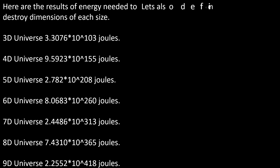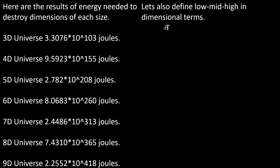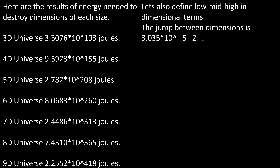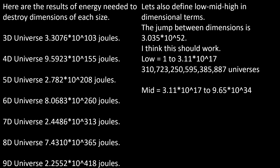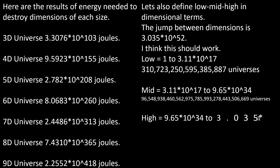Let's also define low, mid, and high in dimensional terms. The jump between dimensions is 3.035 times 10 to the 52. Low equals 1 to 3.11 × 10^17. Mid equals 3.11 × 10^17 to 9.65 × 10^34. High equals 9.65 × 10^34 to 3.035 × 10^52.